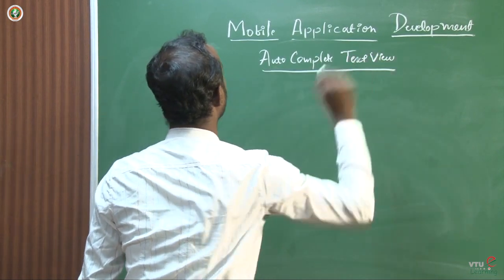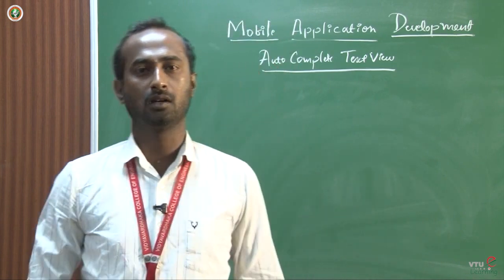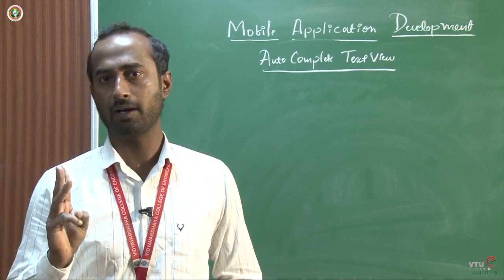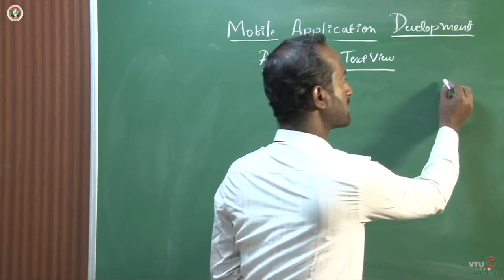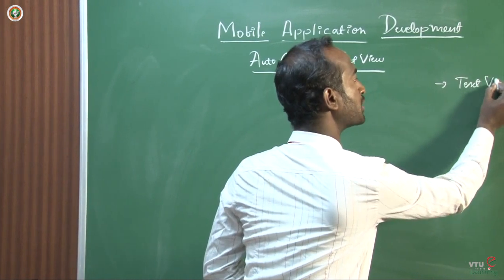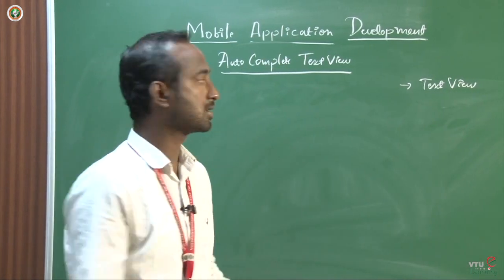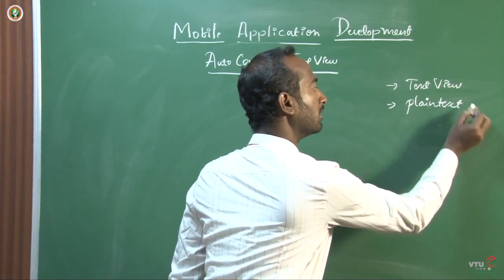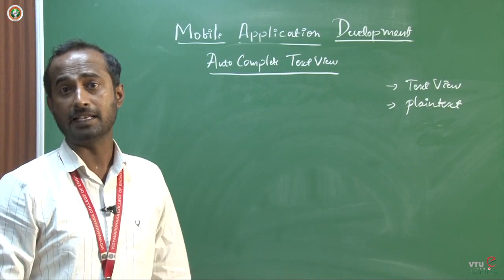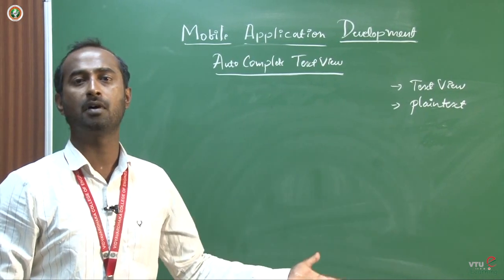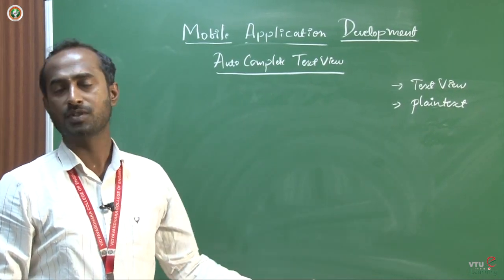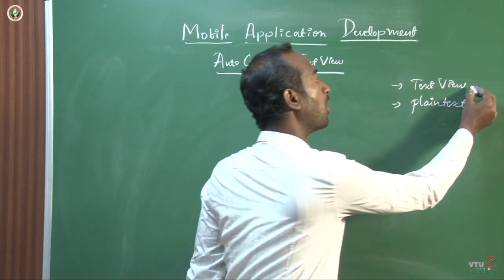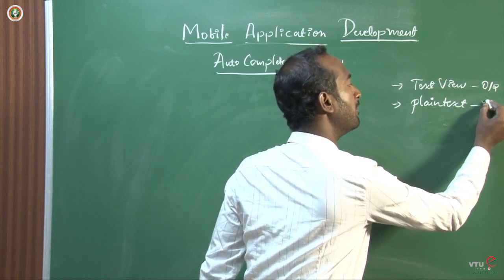What is AutoComplete TextView? With respect to working with text views, we have three components. One is TextView, which is for display/result purpose. The other is plain text, which has many varieties — email, password, phone number, username — and is used for input purpose.